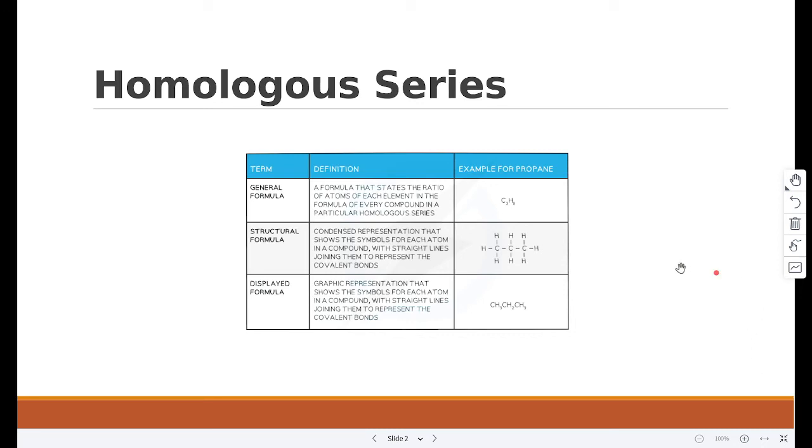A homologous series is a family of organic compounds that have similar features and chemical properties due to them having the same functional group. All members of a homologous series have the same general formula.